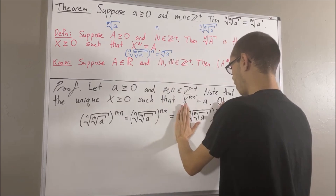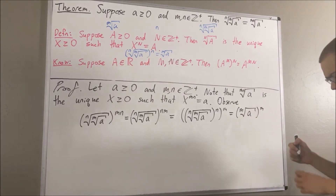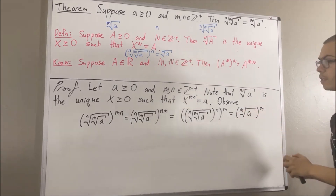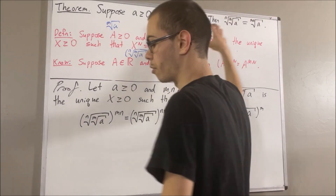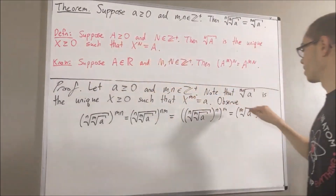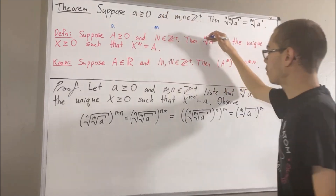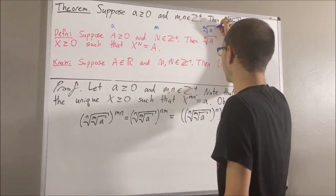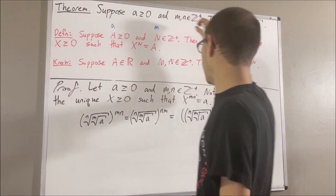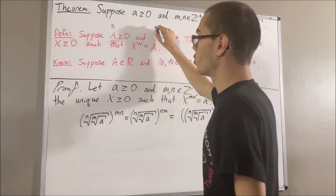In other words, the expression inside the outermost parentheses equals the nth root of a. So we now have the nth root of a raised to the power of n, and we also expect the nth root and the power of n to cancel here, leaving just a. Applying our definition again with capital A equal to a and capital N equal to n: the nth root of a is the unique real number greater than or equal to zero such that if we raise it to the power of n, we get a.